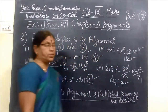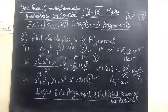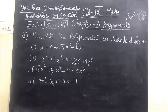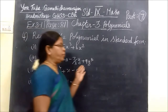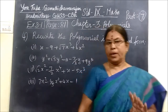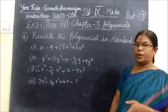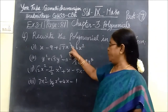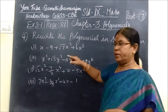Now we see the next one — the fourth question. Rewrite the polynomial in standard form. Standard form means you are writing in ascending order or descending order. The power should be in ascending order or else in descending order.